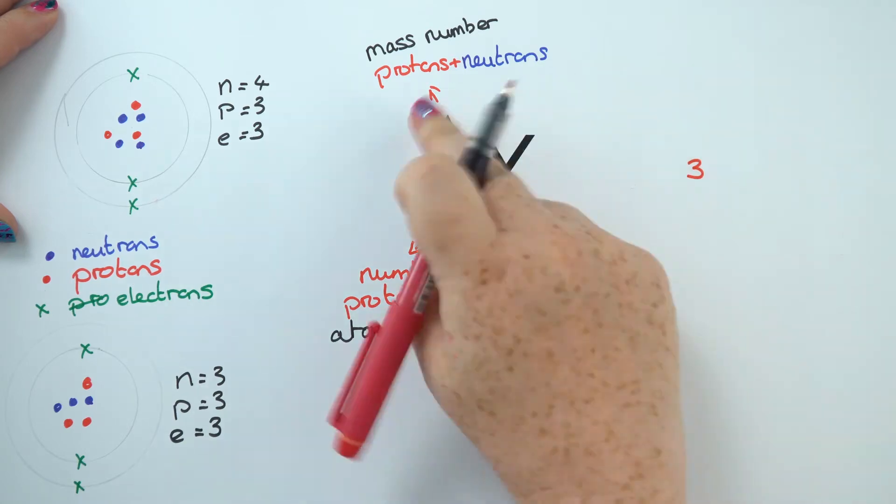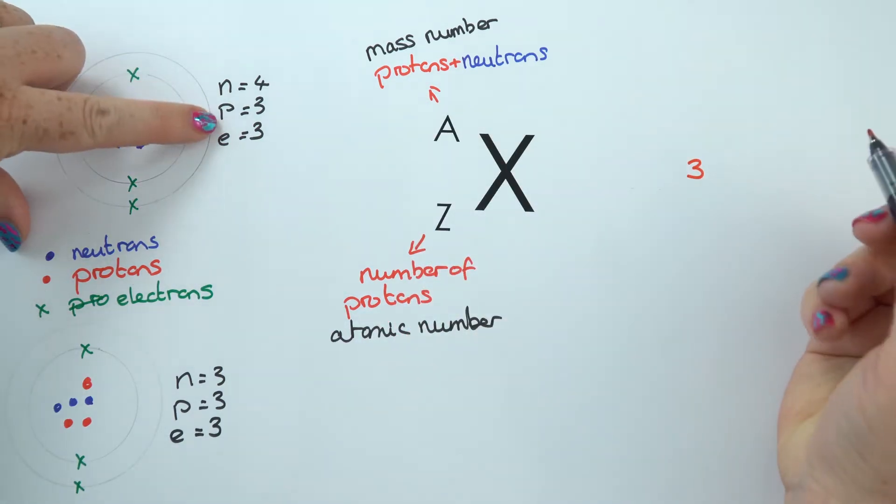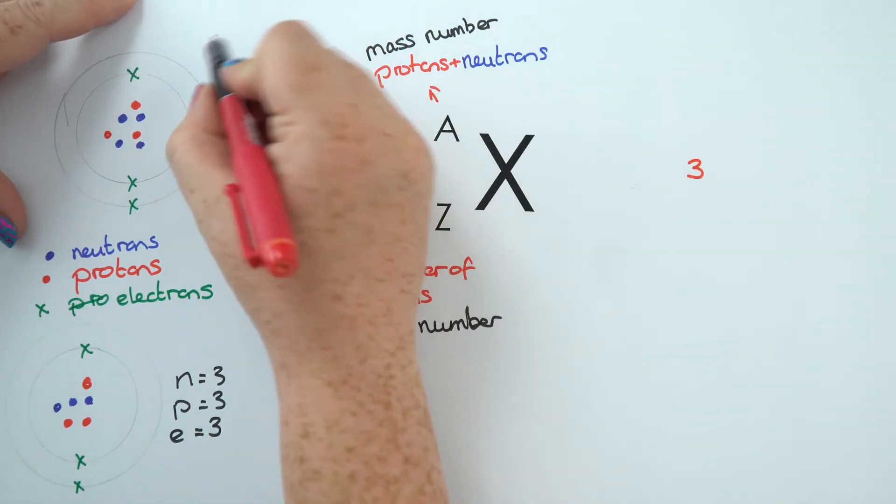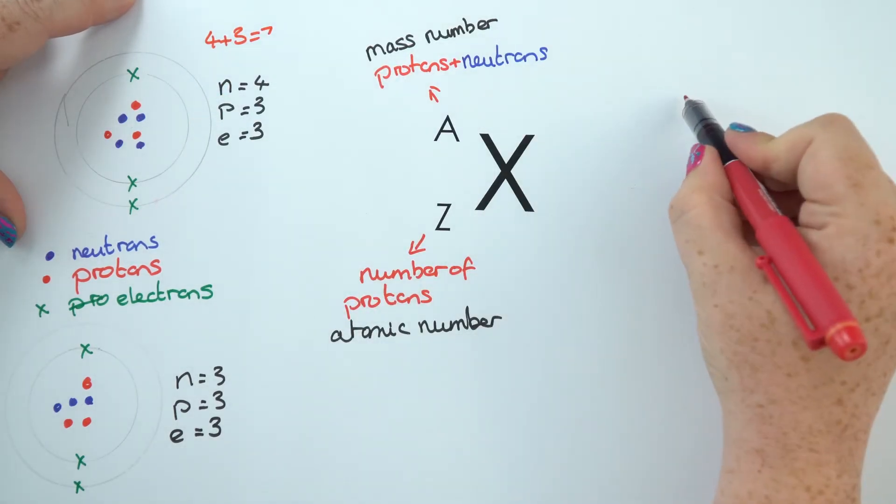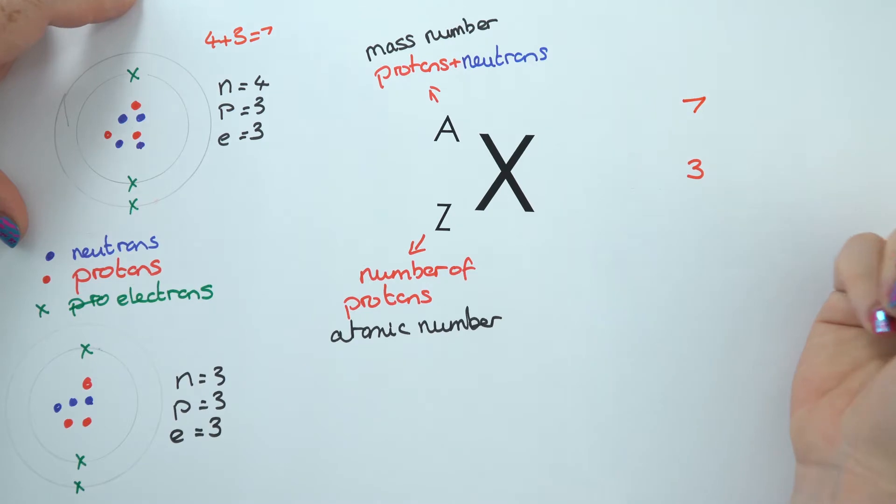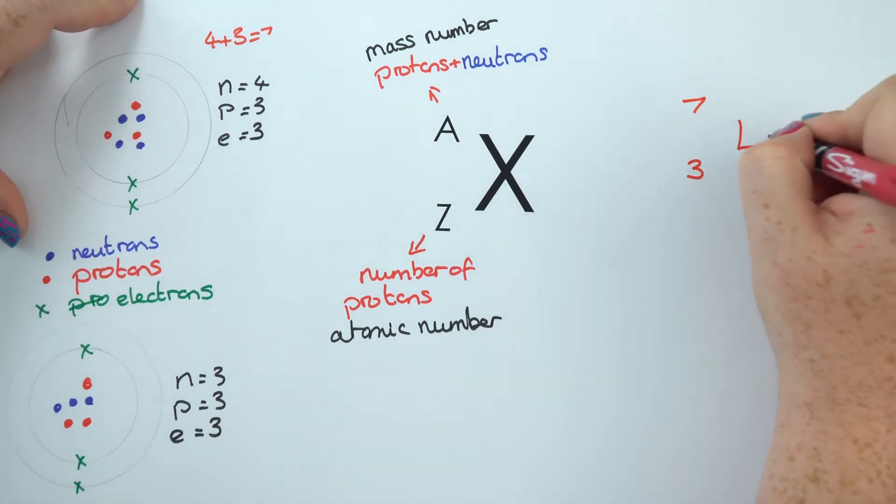So we'll put a three there. The number at the top, mass number, is the protons plus the neutrons, so that is four plus three equals seven. And the third element which has a mass of seven is lithium.